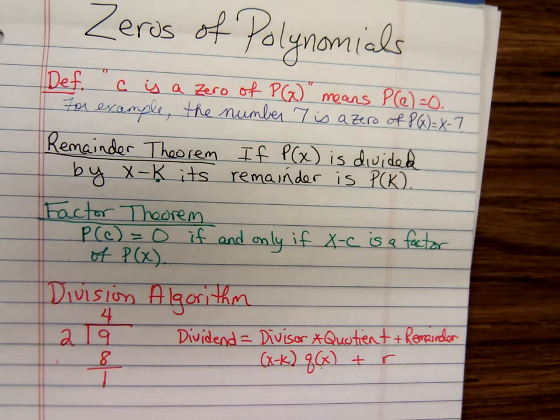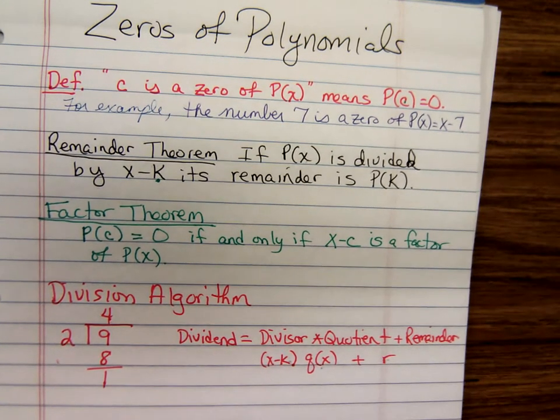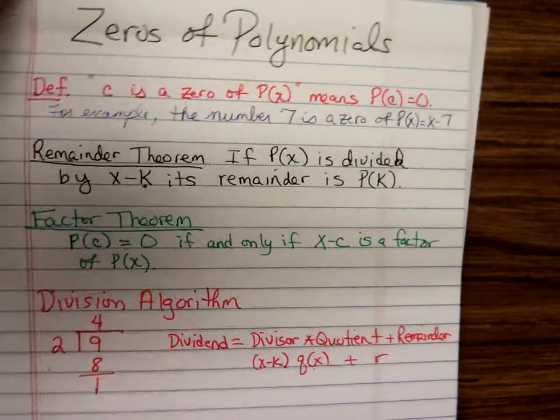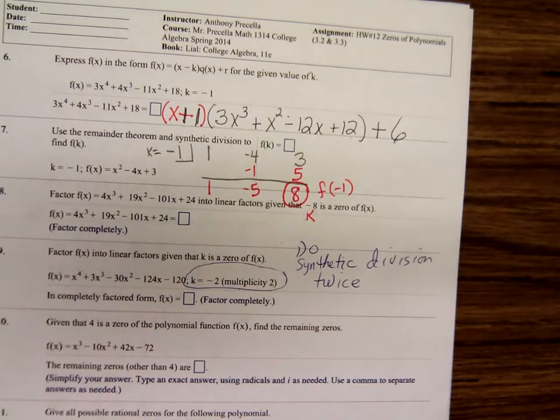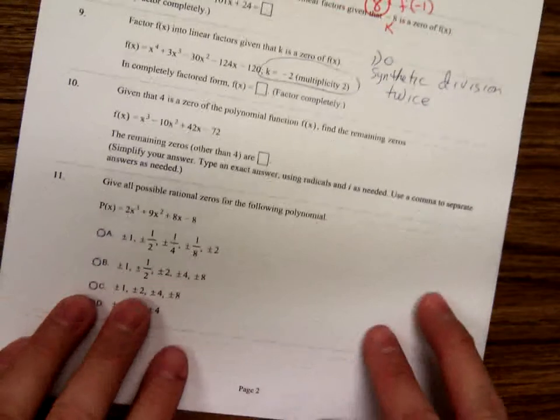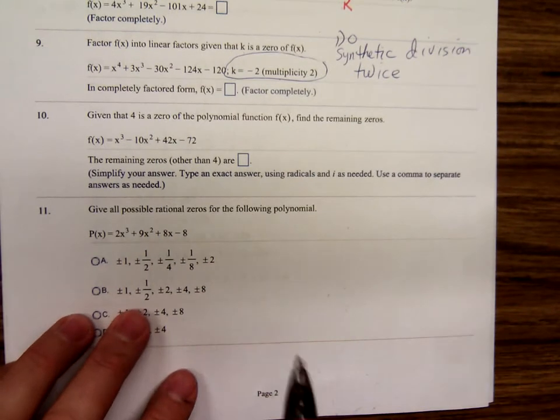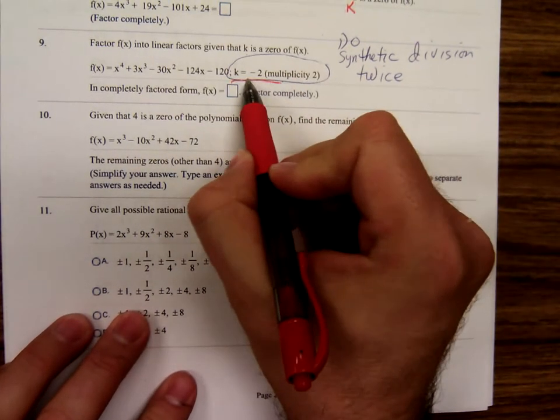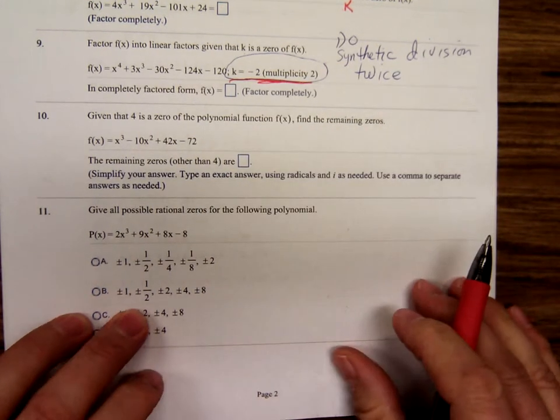This is Anthony Purcelli doing some theory of equations, zeros and polynomials with this college algebra class. We've already defined zeros, stated the remainder theorem, factor theorem, division algorithm, did some problems involving synthetic division. And what we were working on now was, if you're given one zero, factor the polynomial.